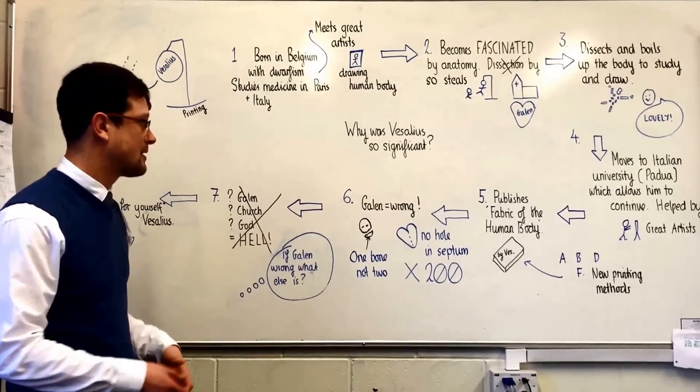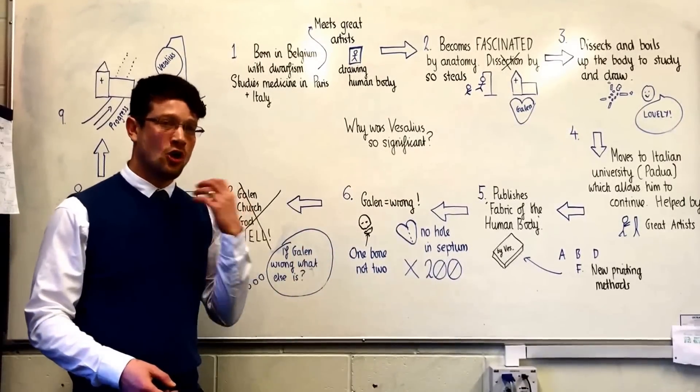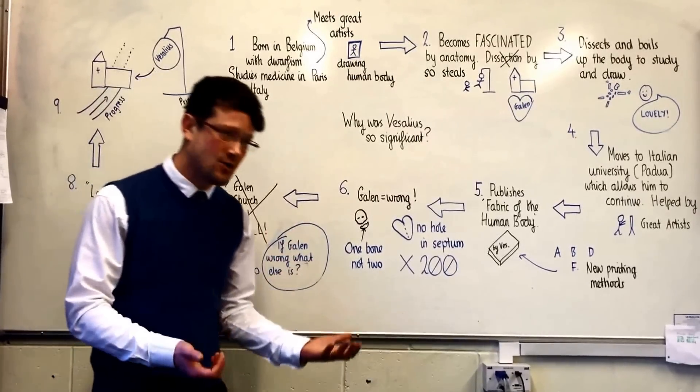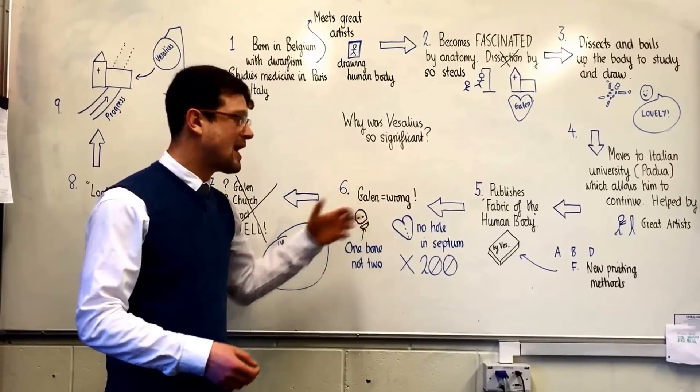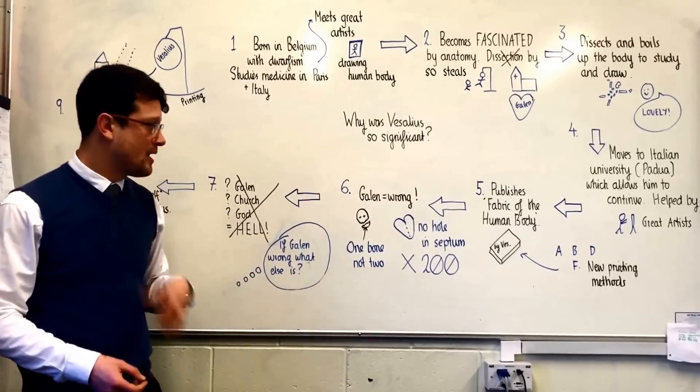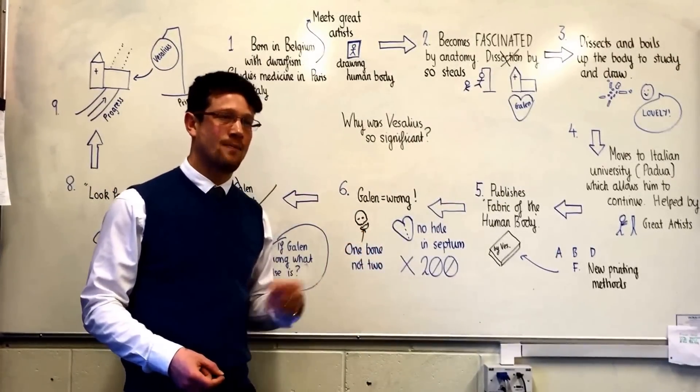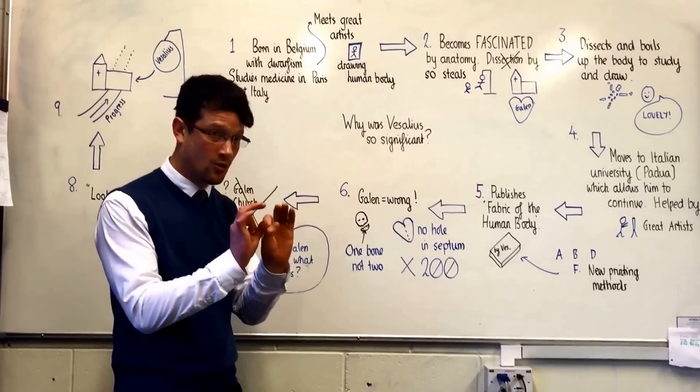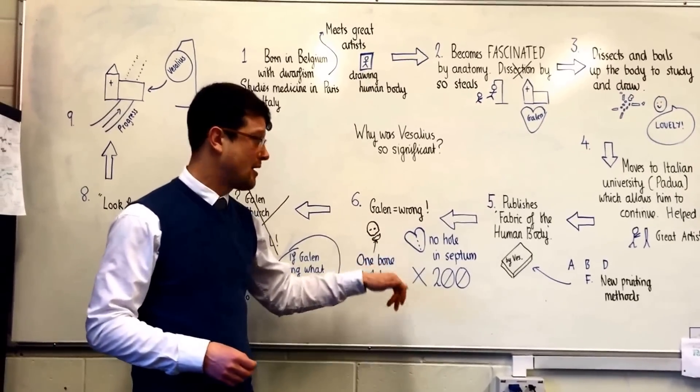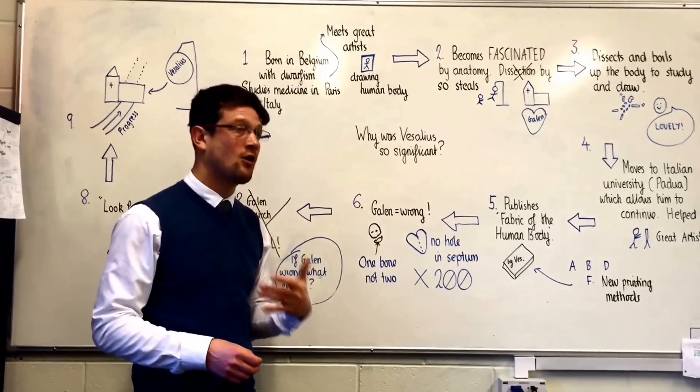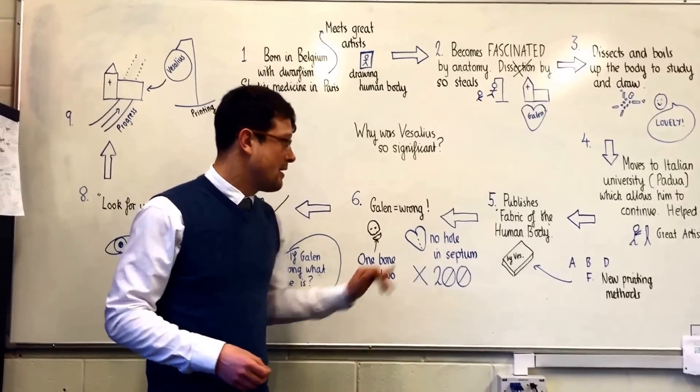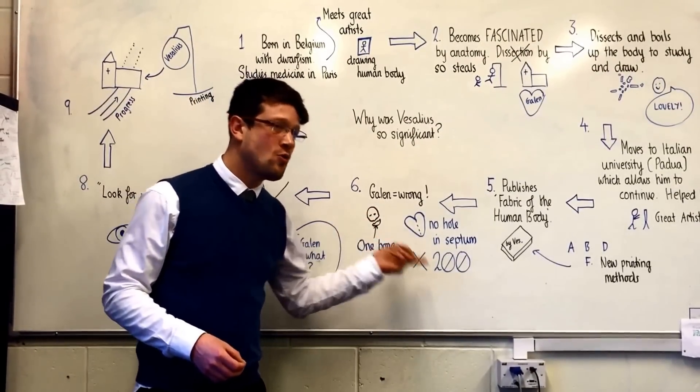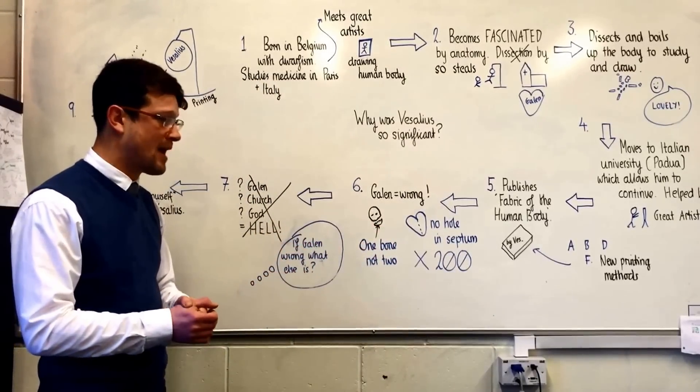The most famous of these are that Galen said the jawbone of a human being came in two parts like an animal because that's what Galen had dissected but Vesalius found it was only one bone. In addition Galen said that blood passed through the middle of the heart through invisible holes in the septum. Vesalius looked really hard but could not find those holes and concluded they didn't exist. Along with these two errors Vesalius discovered another 200 mistakes that Galen had made.